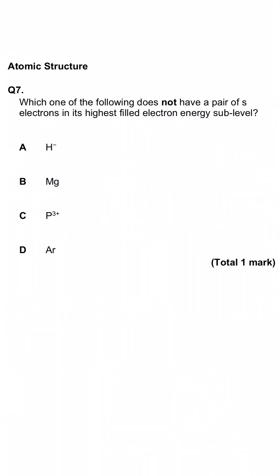This question is about electron arrangement. We've been asked which of our options does not have a pair of S electrons in its highest filled electron energy subshell. So hydrogen has got one electron, so normally it would be 1s1, but because it's negatively charged it must have gained an electron, so it is 1s2, that's a pair. Magnesium has got 12 electrons, and it finishes in 3s2, again, that's a pair.